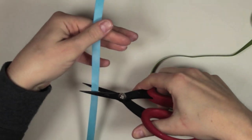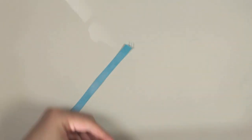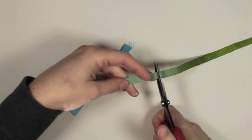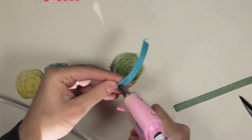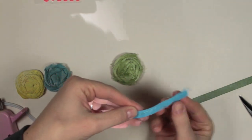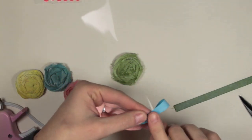I'm cutting off a small section of each of the ribbons. I'm going to be using these ribbons to create little leaves that come off the sides of these rosette flowers.